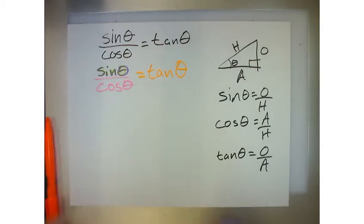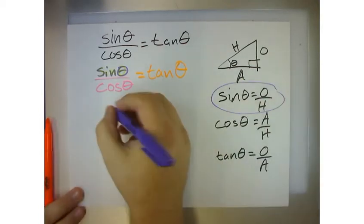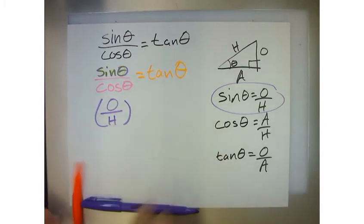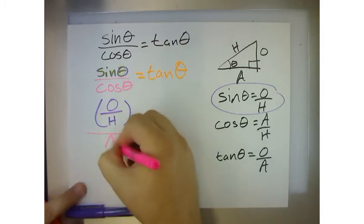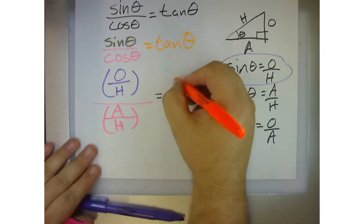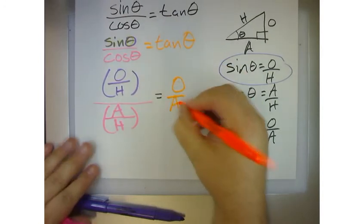So, sine of theta is opposite over the hypotenuse, right? Cosine of theta is adjacent over the hypotenuse, right? And we're stating that those are equal to tangent, which is going to be the opposite over the adjacent.